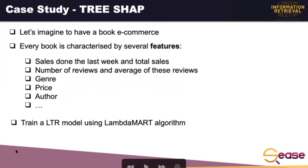Okay, Anna, thank you. So now the case study. Let's imagine having an e-book e-commerce. We collect all the interactions made by the user on the website, manipulate them in order to build the training set, and we end up with many features like sales done last week, total sales, number of reviews, average rating, gender, price, order, and so on. We then train our Learning to Rank model using the LambdaMART algorithm, and we use the library SHAP to understand the model behavior. Since LambdaMART is based on trees, we can use TreeSHAP — the tree explainer. We are going to explore different types of plots that TreeSHAP provides, each one highlighting a specific aspect of the model.